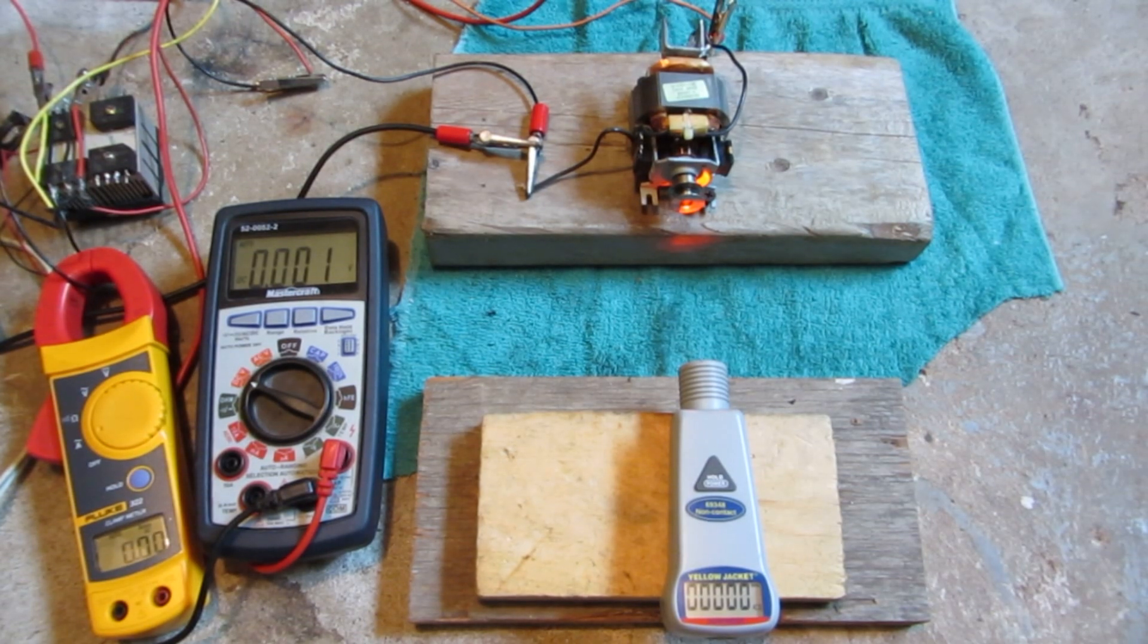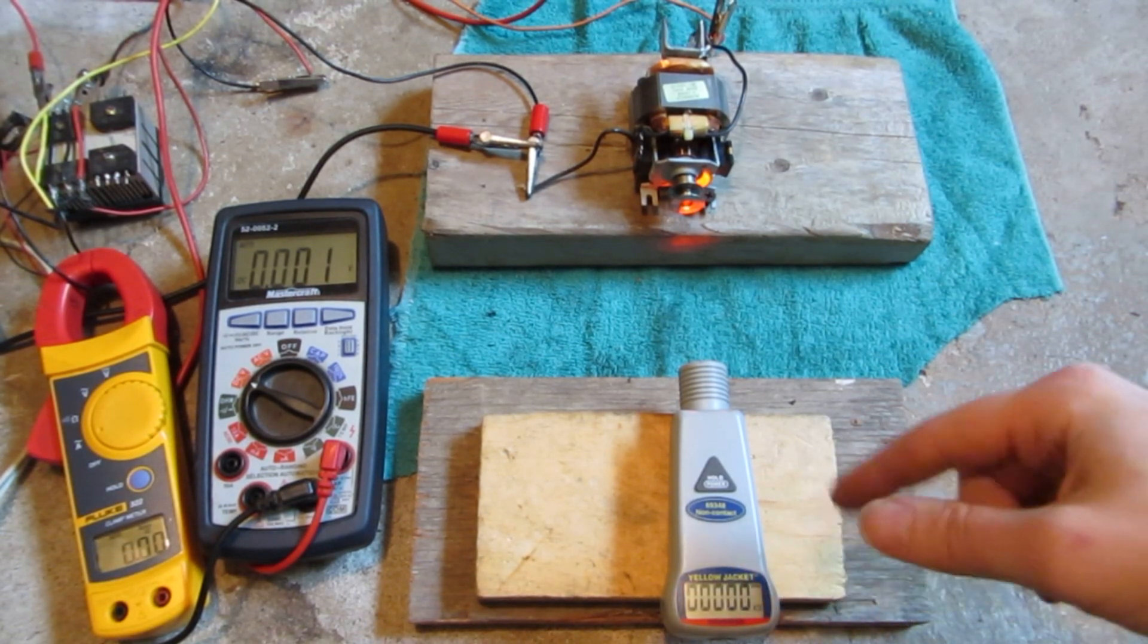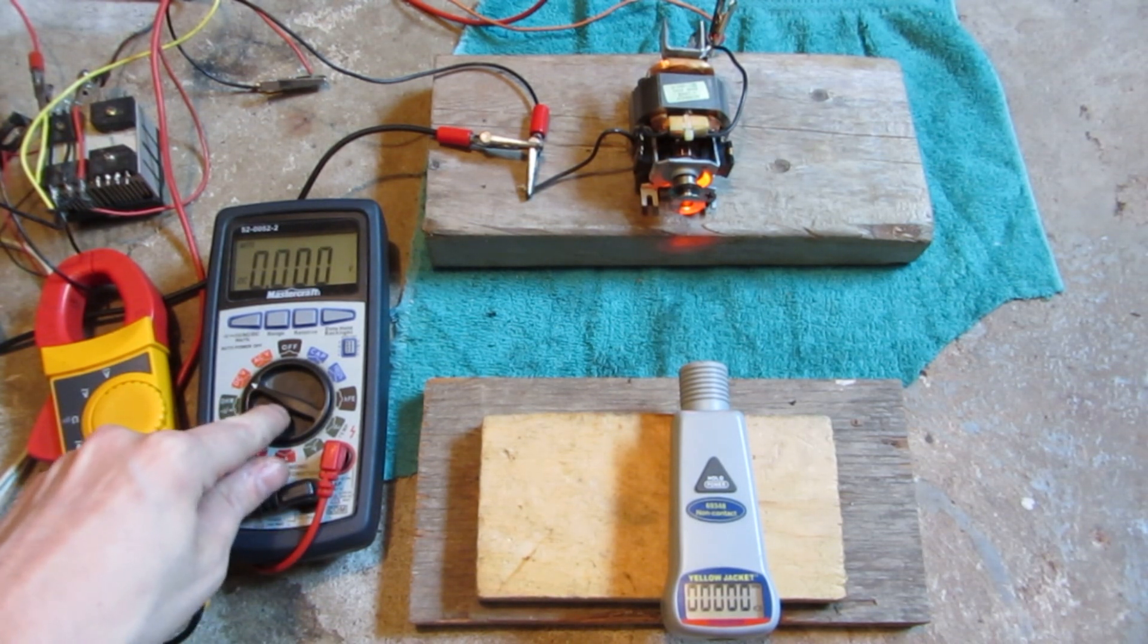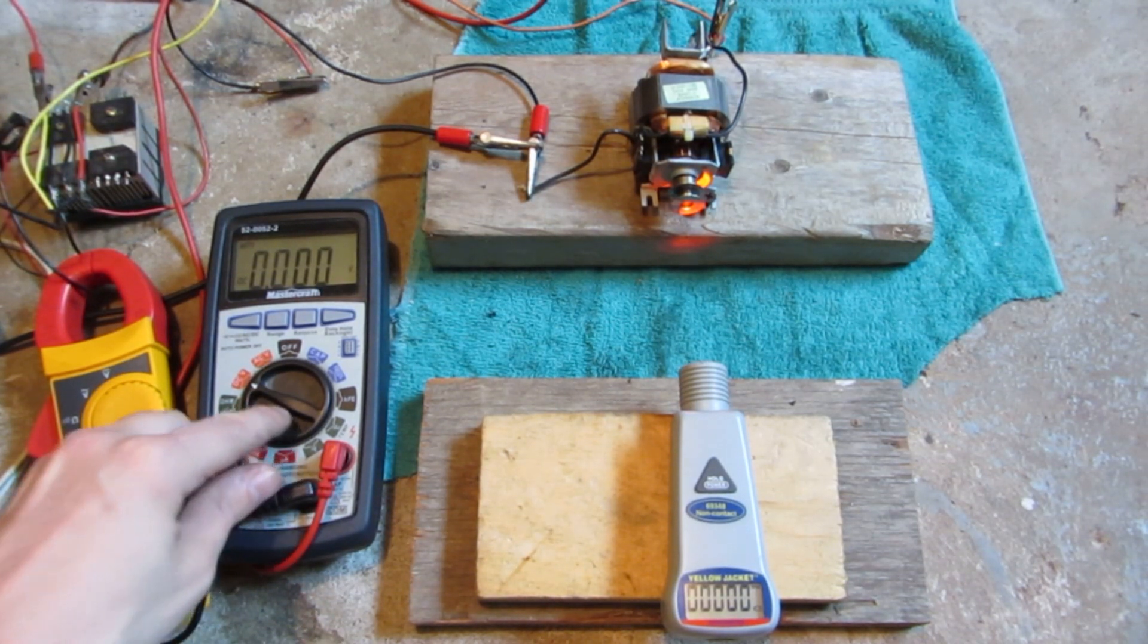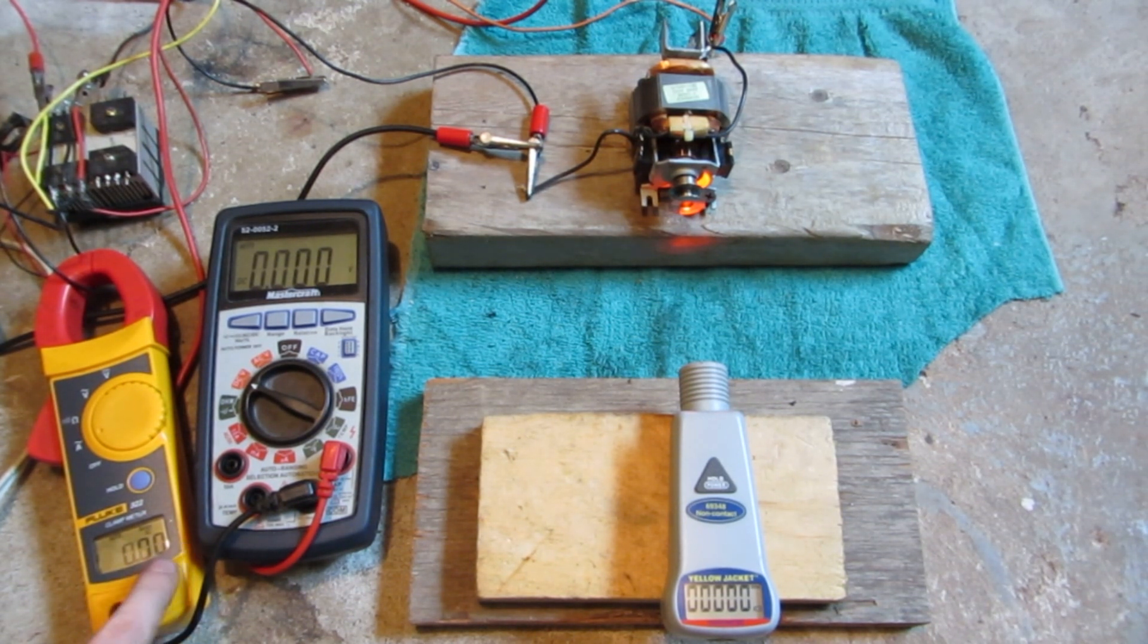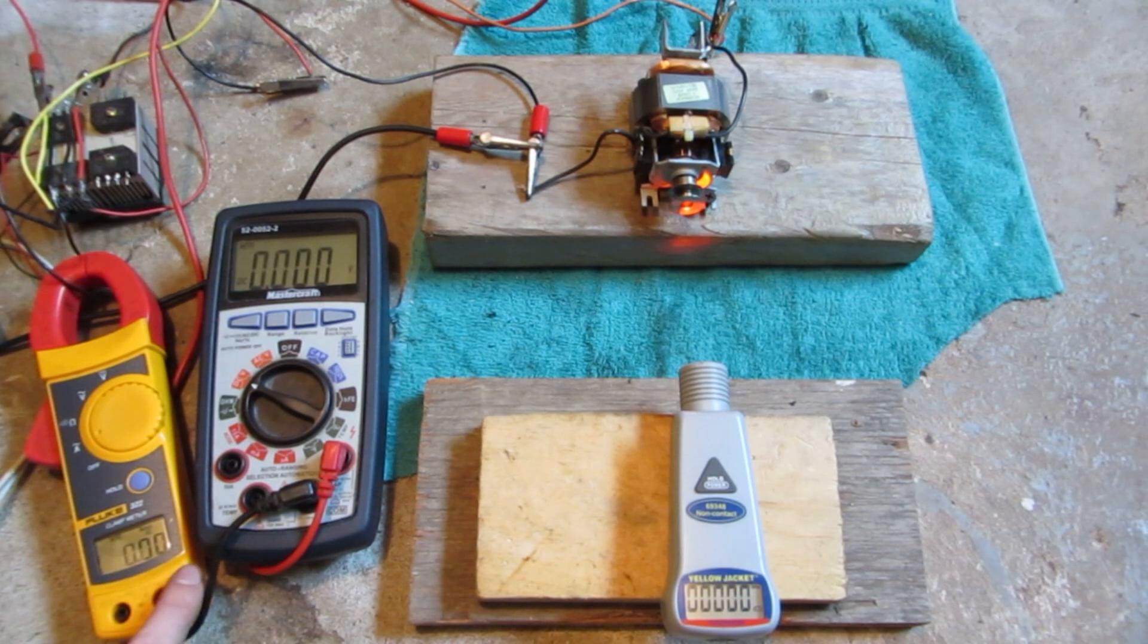Alright, all set up. That's going to be measuring your RPMs, hopefully they'll be a very high number. That's your DC volts. I know the motors are AC, but DC is better for them. They go faster. And this is your amps off the transformer.